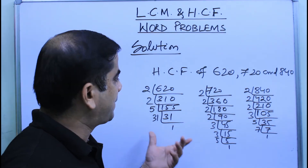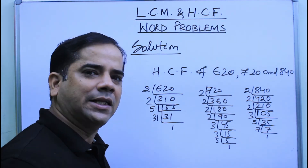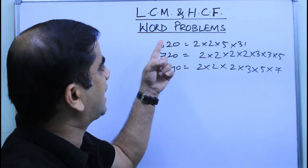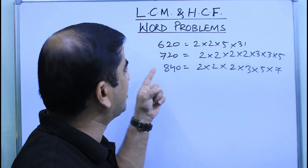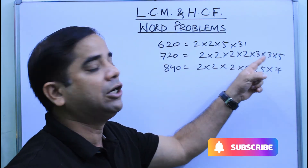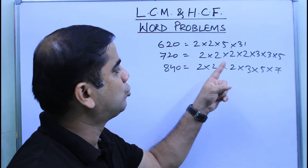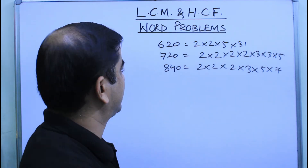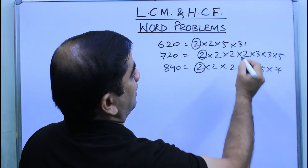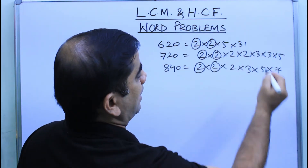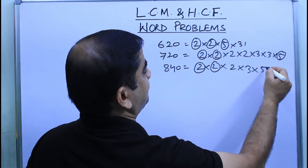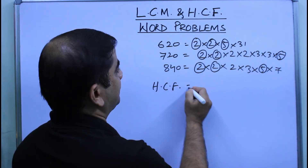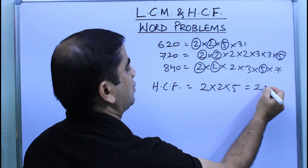I have used the prime factorization method — you can also use the division method. After factorization: 620 = 2 × 2 × 5 × 31; 720 = 2 × 2 × 2 × 2 × 3 × 3 × 5; and 840 = 2 × 2 × 2 × 3 × 5 × 7. Finding the common factors, we get 2, 2, and 5. So the HCF = 2 × 2 × 5 = 20.